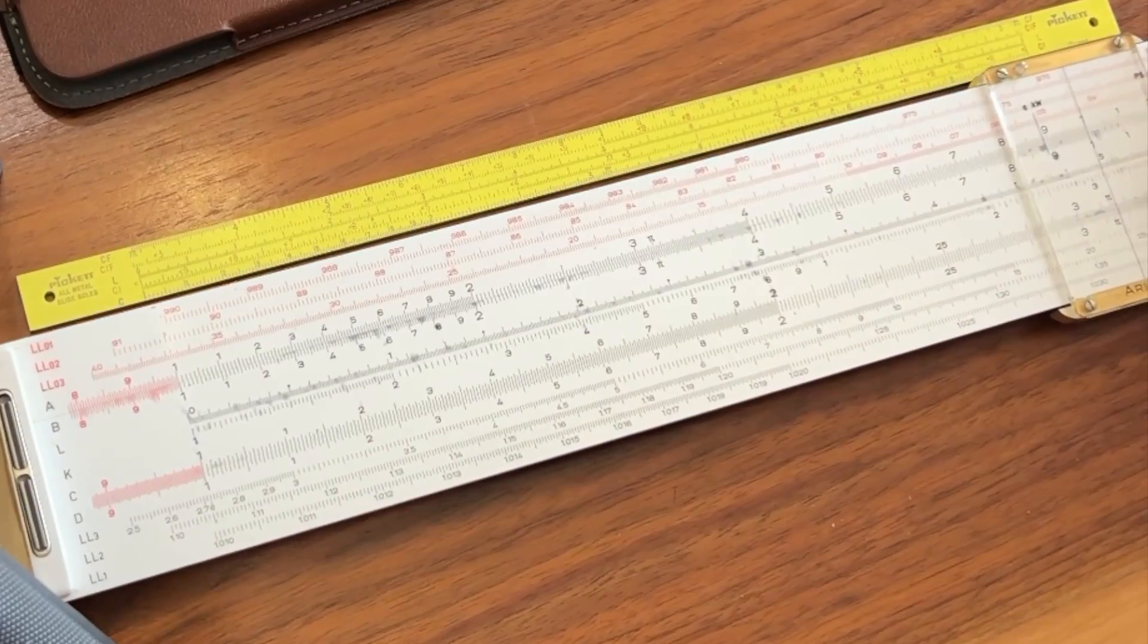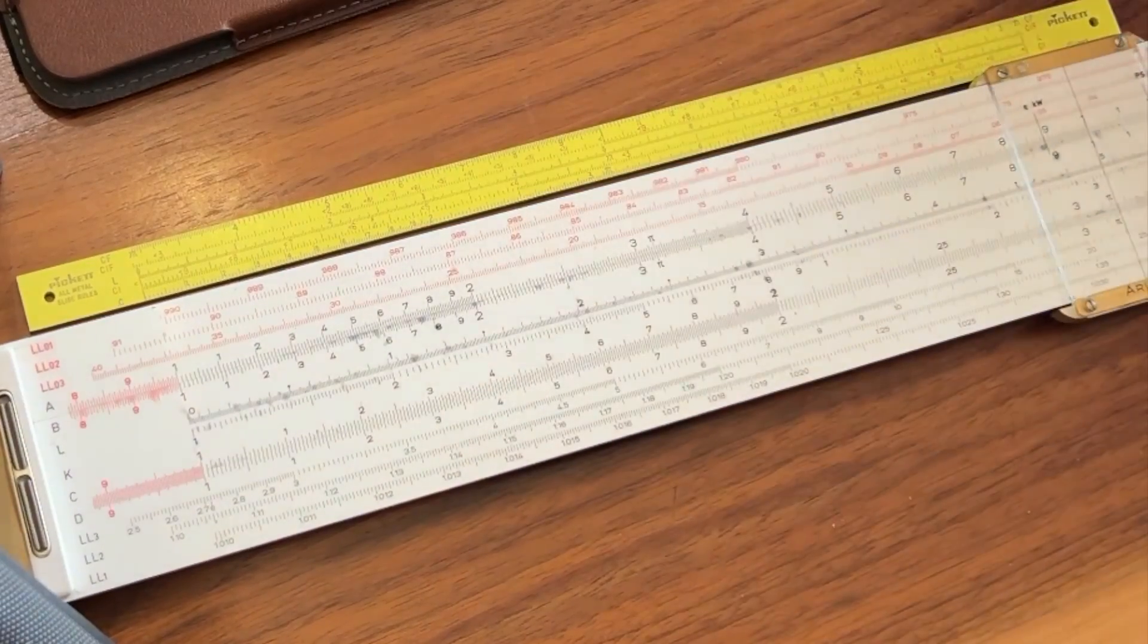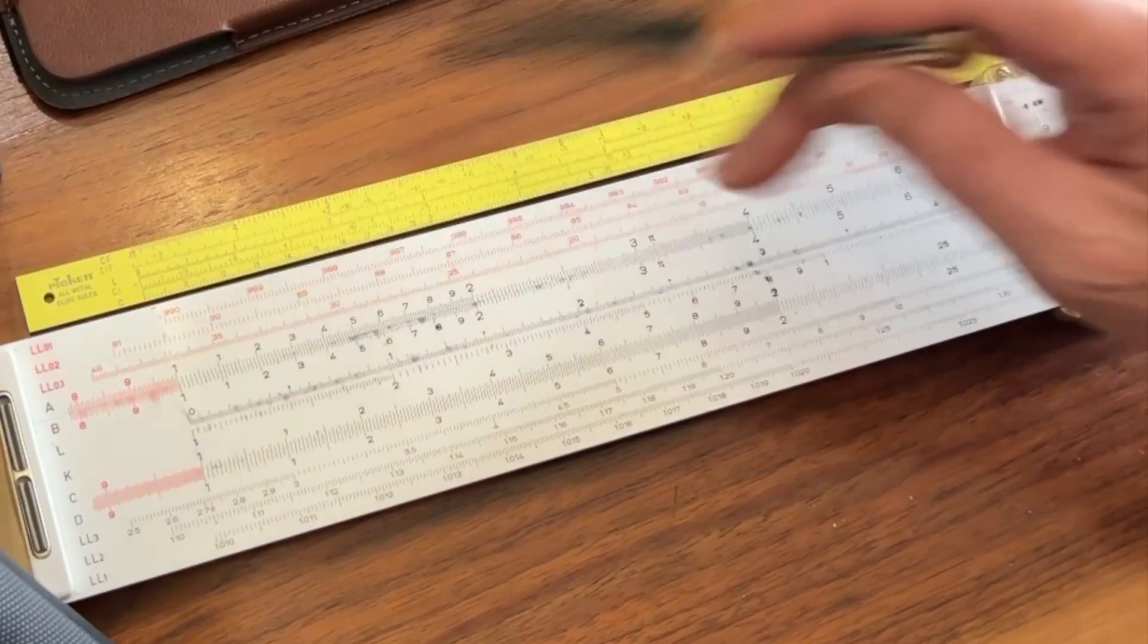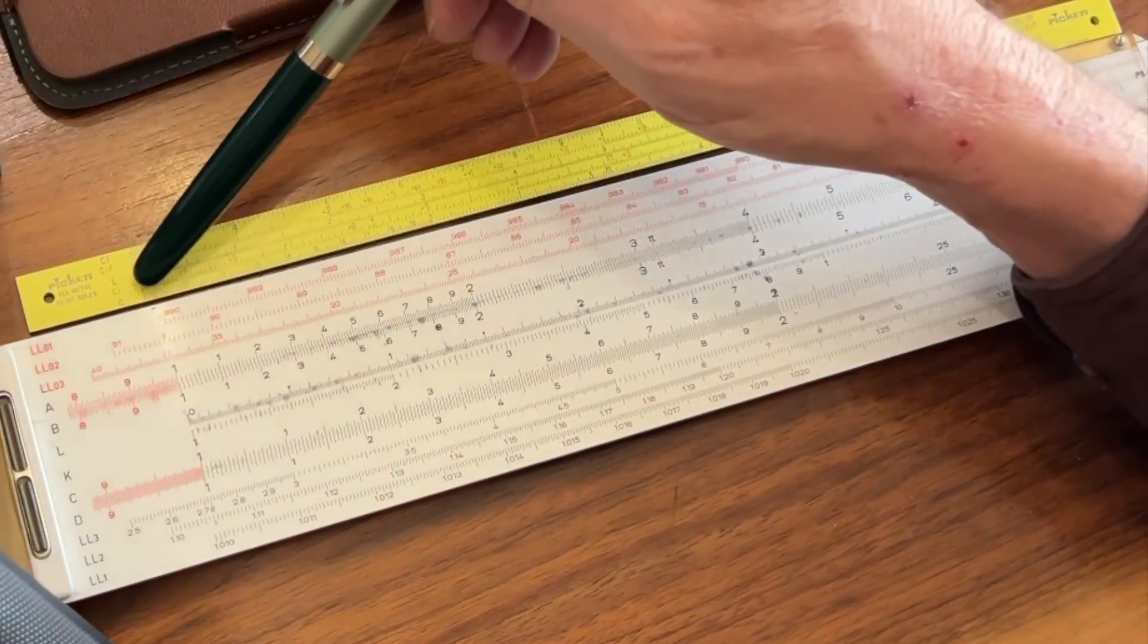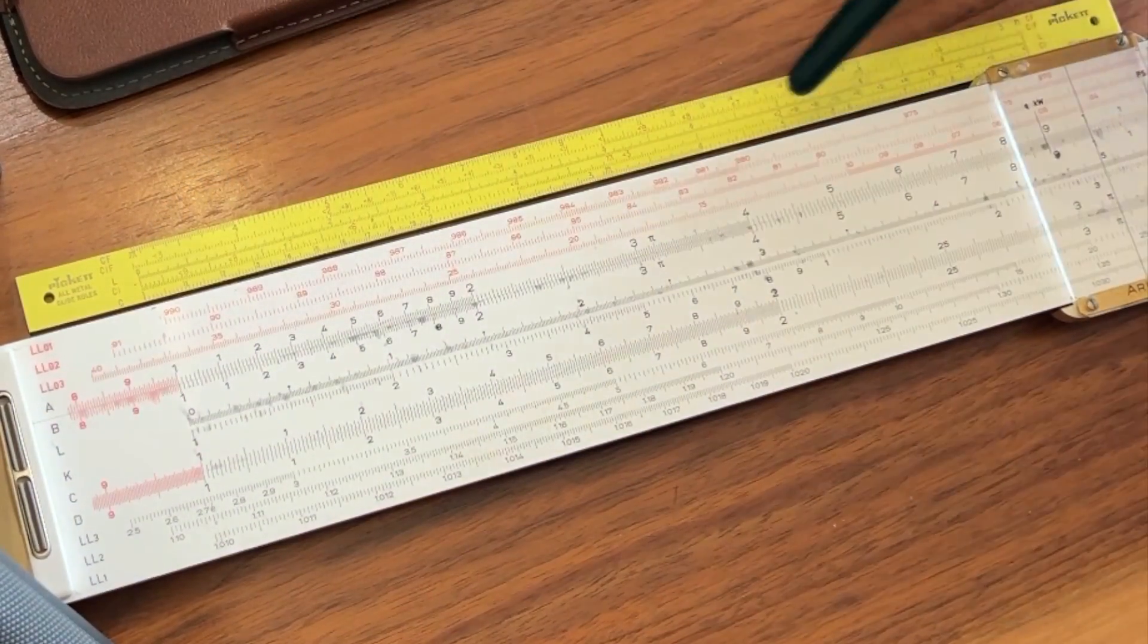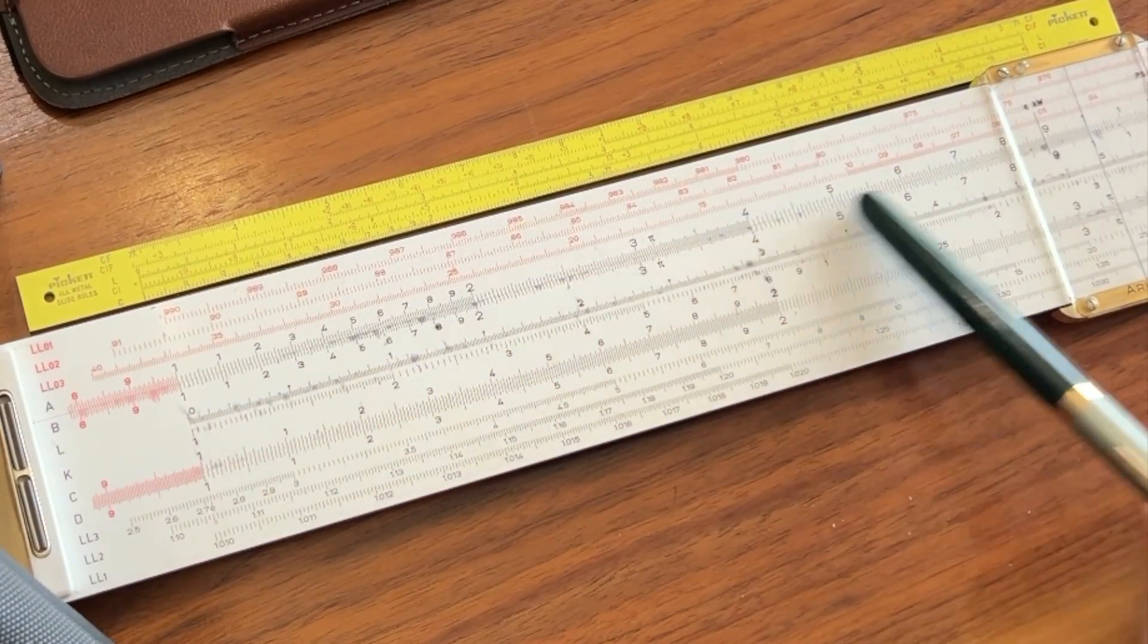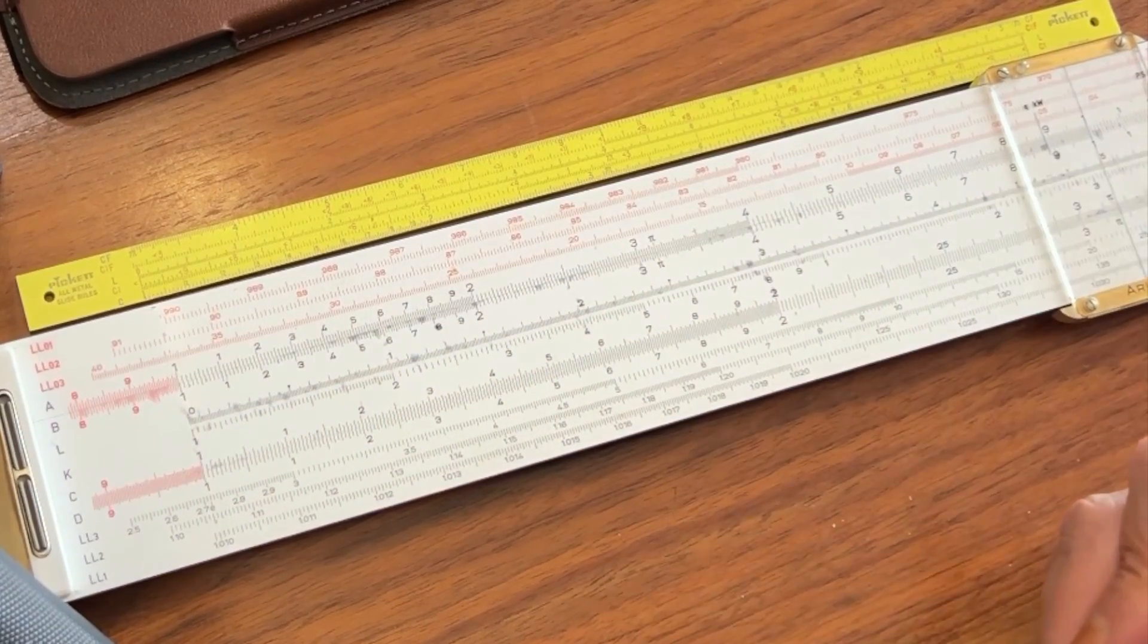If you compare this to the slide out of my Pickett N500, which is a 10-inch slide rule, you'll see that you have the C scale here at the bottom, and it goes from 1 to 10, and it matches the A-B scale on the bigger 20-inch slide rule.